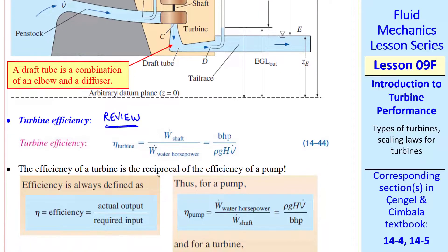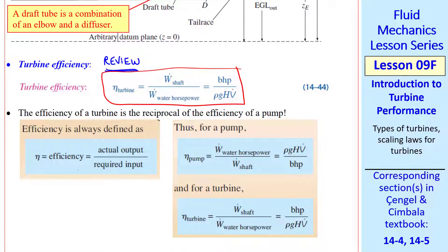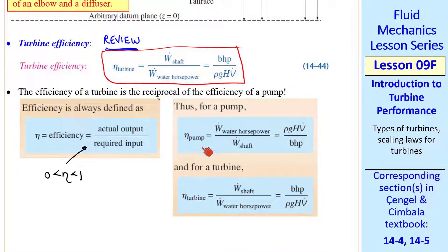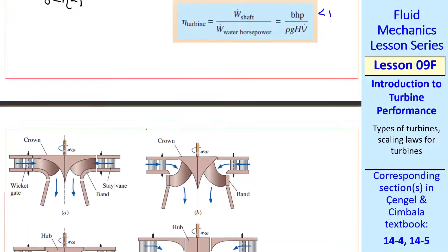I'll do a quick review of turbine efficiency. We define turbine efficiency as shaft power over water horsepower, or BHP over ρgHV̇. We always define efficiency as actual output over required input so that η is between 0 and 1. Compared to a pump, turbine efficiency is the reciprocal of pump efficiency — for a pump we put in brake horsepower to get water horsepower out, whereas for a turbine the shaft power is the desired output and we need more water horsepower to get it. Turbine efficiencies can actually be quite large; I've worked on turbines where the efficiency was greater than 95%.